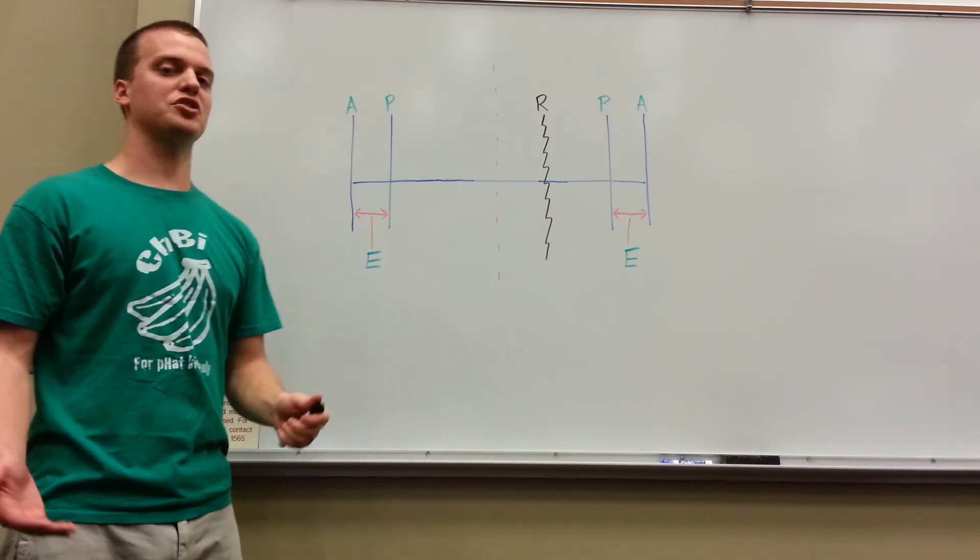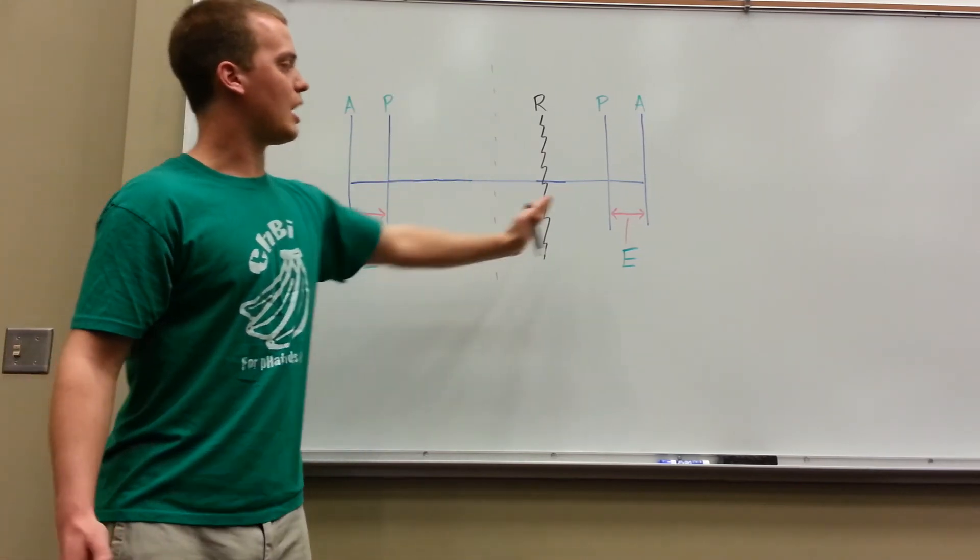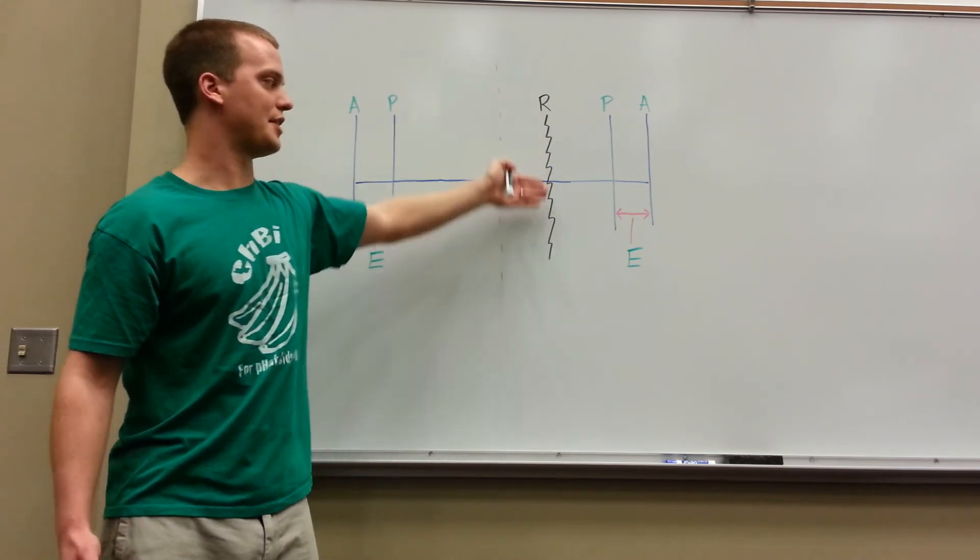Now let's say we have a restriction or a somatic dysfunction in our range of motion. Here, on the opposite side of this diagram, you can see that this restriction is denoted by this R and this black line.